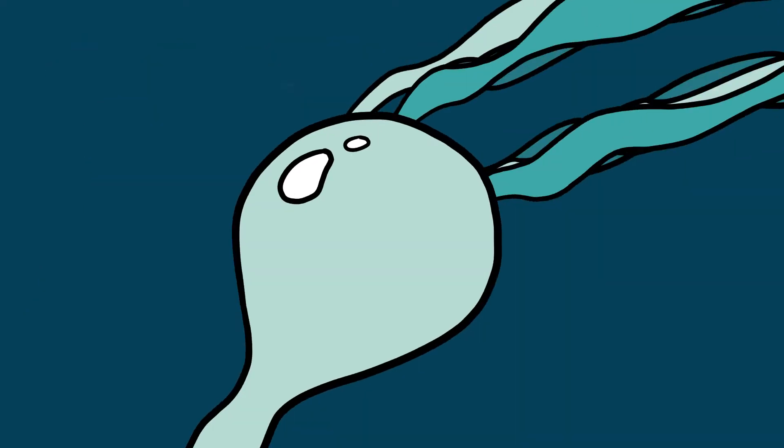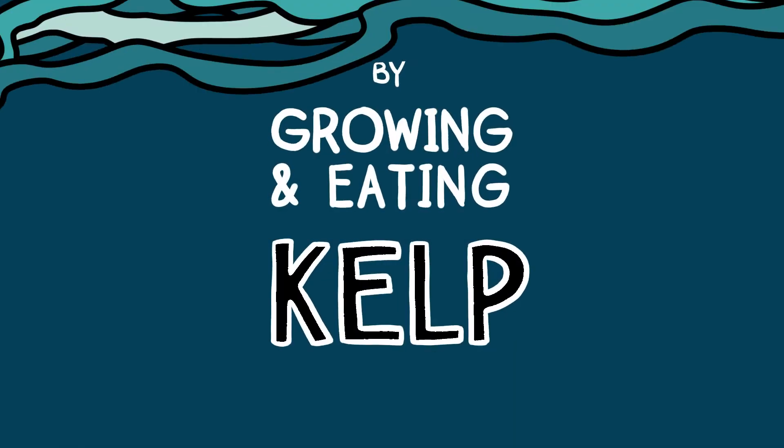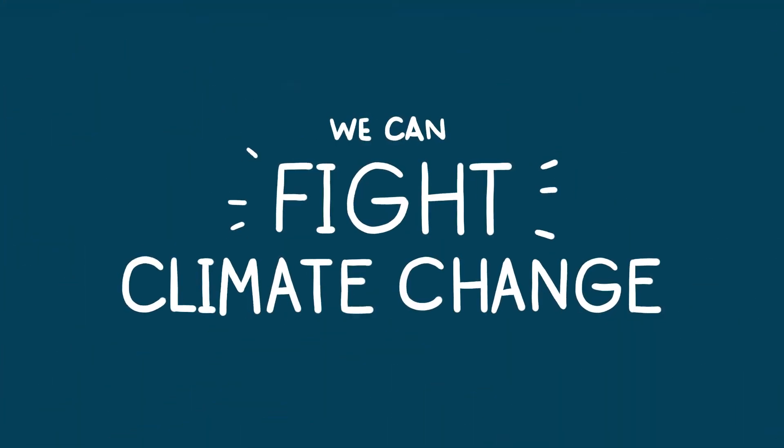Kelp is a kind of seaweed and is one of the most Earth-friendly foods on the planet. By growing and eating more kelp, we can fight climate change and improve the health of our oceans.